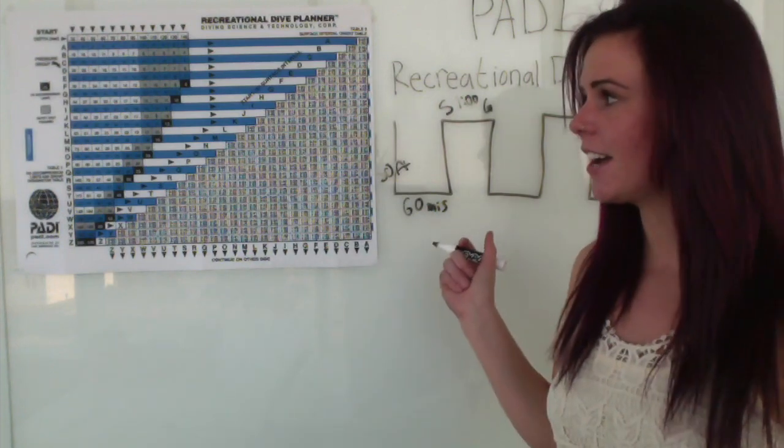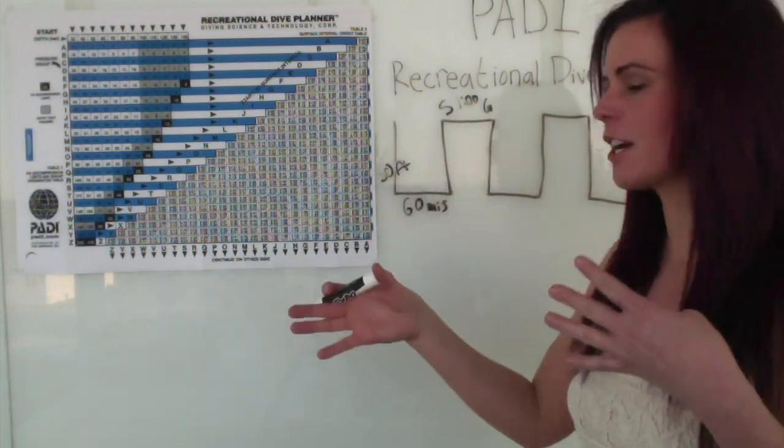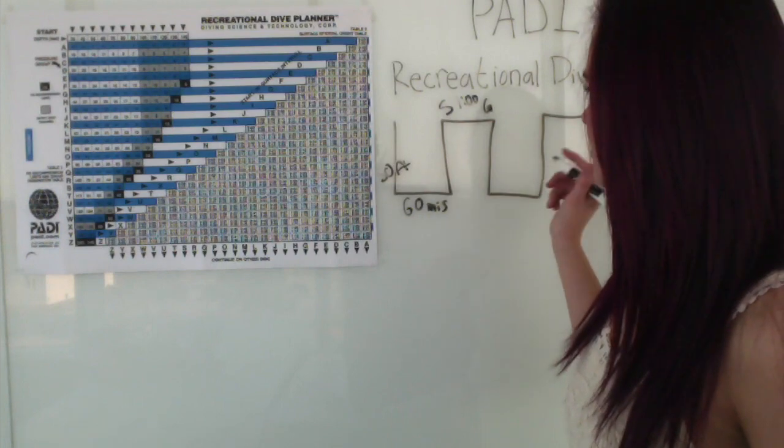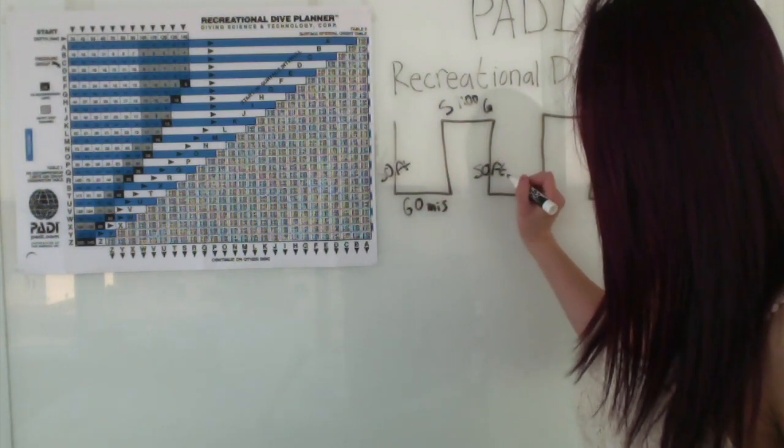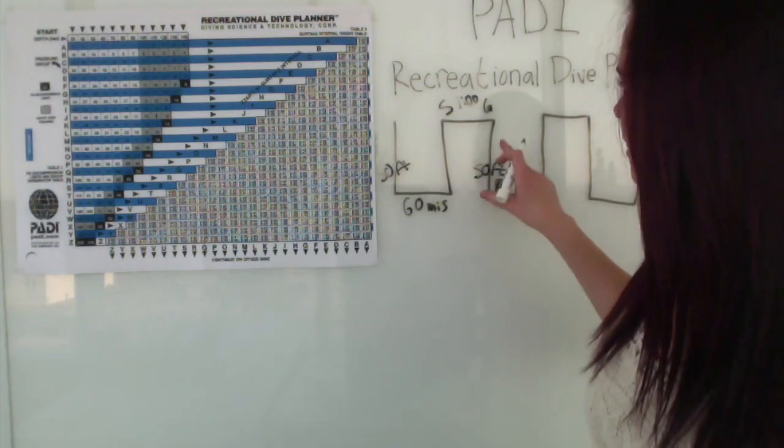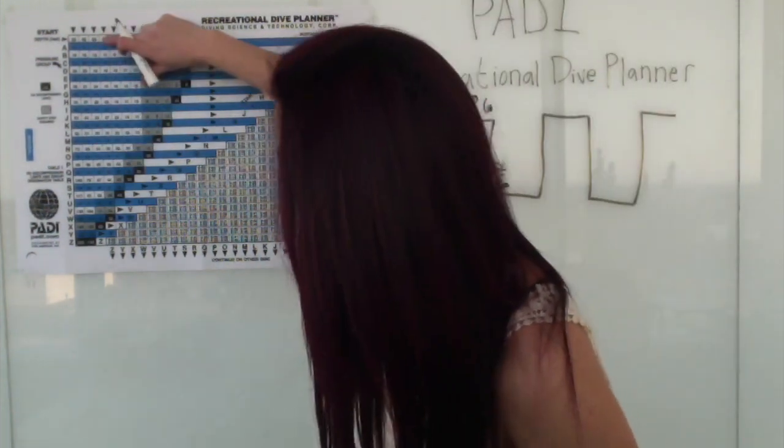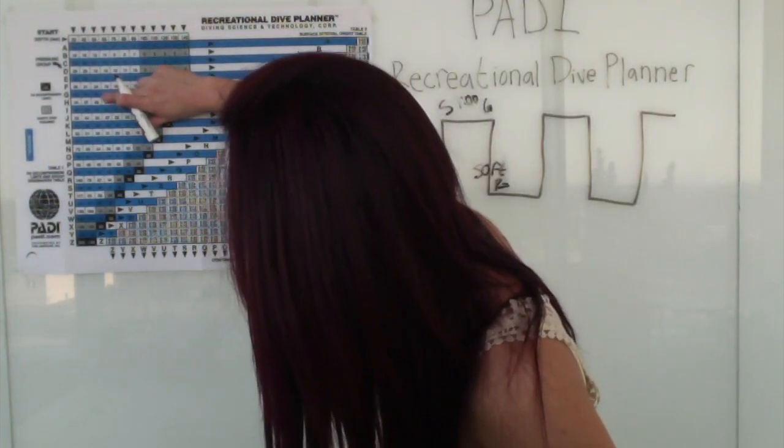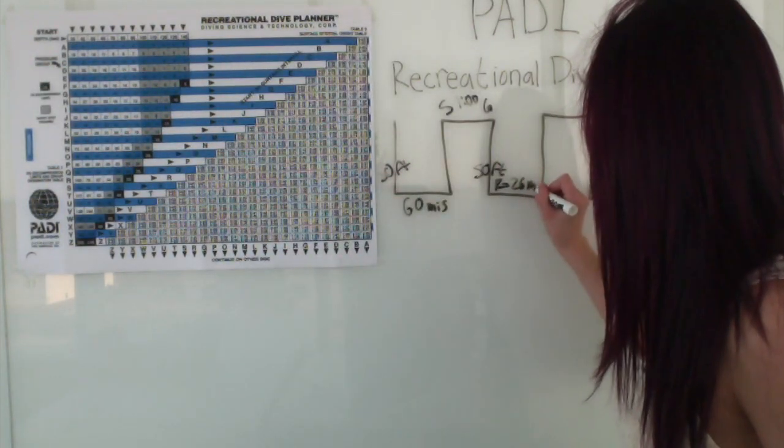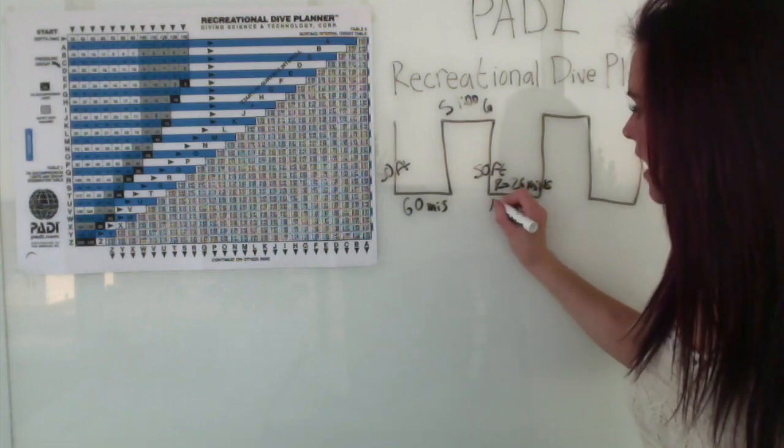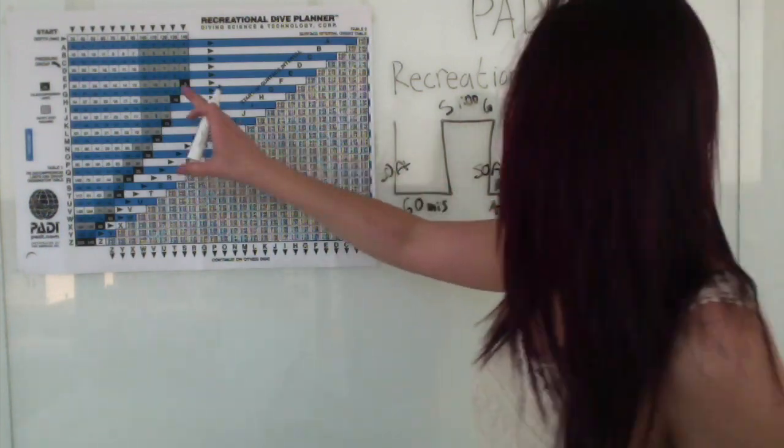So for our next dive you have to account for whatever depth you're going, the new pressure group. So if we're going to go to 50 feet again, we first need to find our residual nitrogen. So 50 feet at pressure group G is 26 minutes residual nitrogen. Let's say our actual time that we want to spend down is 40 minutes.